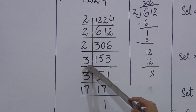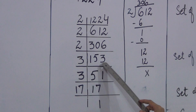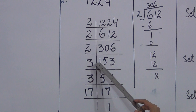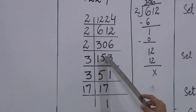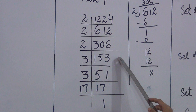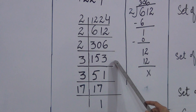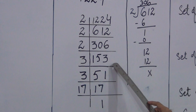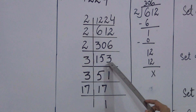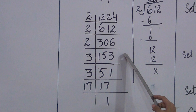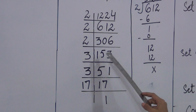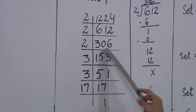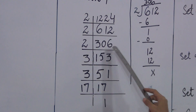The divisibility rule for 3: we find all the digits of the number and add them. 1 + 5 + 3 = 9. Since 9 is divisible by 3, it means the whole number 153 is also divisible by 3.